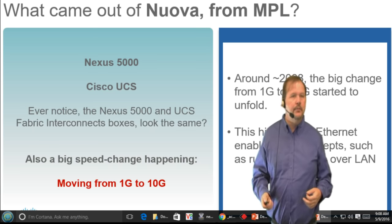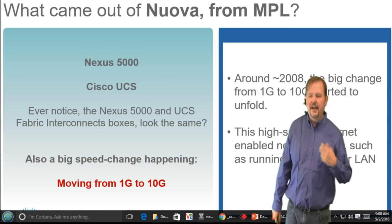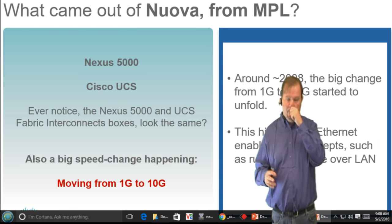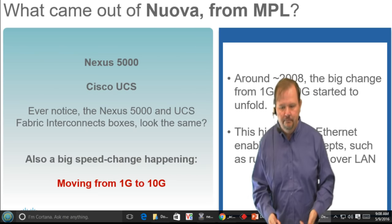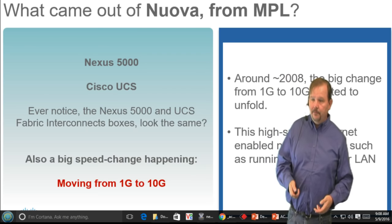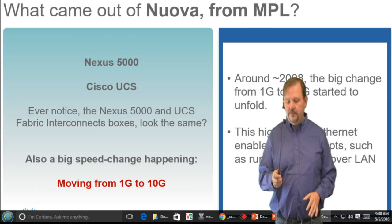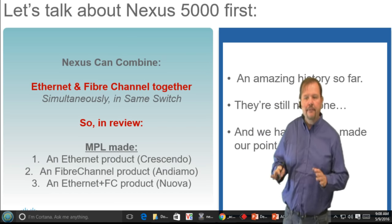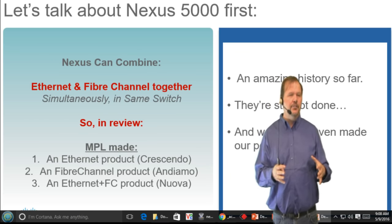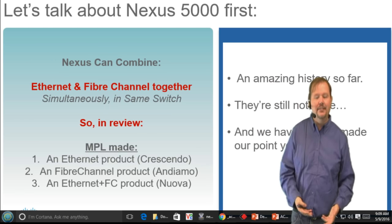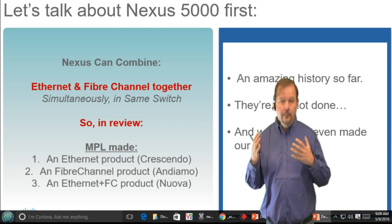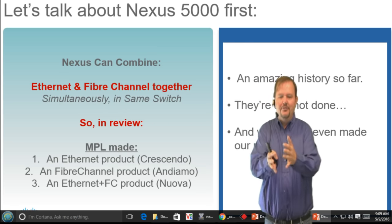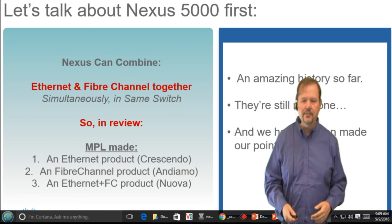One of the big things at this time was a speed change — we were moving to 10 gig. When the Nexus 5000 first came out, it only supported 10 gig and didn't support 1 gig, so customers would receive it with nothing to plug it into. The Nexus 5000 was also the first switch to have both Ethernet and Fiber Channel inside the same box. With Crescendo they made Ethernet switches, with Andiamo they made Fiber Channel switches, and with Nuova they combined them.